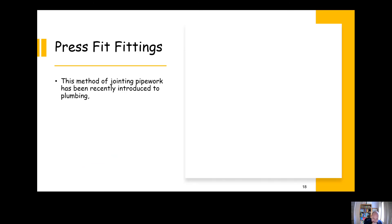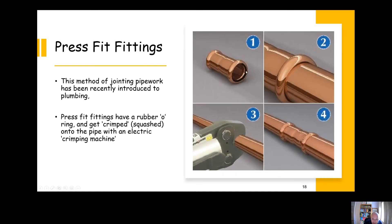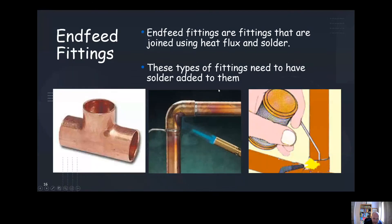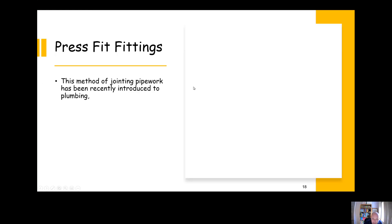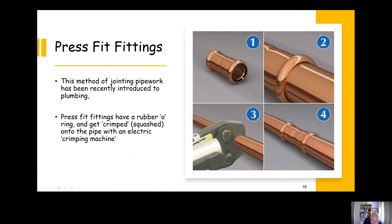Press fittings are a slightly more recent introduction to plumbing. They have a rubber o-ring inside and they look a little bit like integral solder ring fittings. You can see a rubber o-ring there instead of a solder ring. What happens is you get a crimping machine which would crimp the rubber o-ring tightly onto the fitting, squashes it onto the fitting, and that keeps it sealed. That's a heat-free method of jointing. Some sites don't allow hot works, which is working with blowtorches, and in that case we might use press fit fittings.